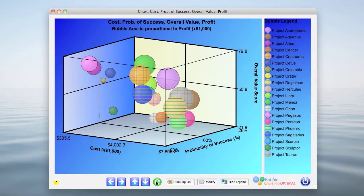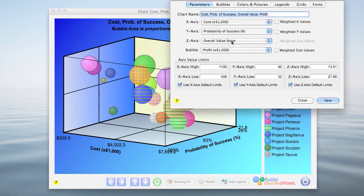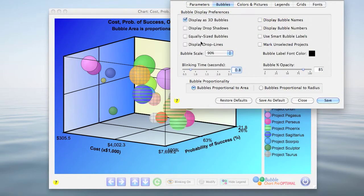In 3D bubble charts, it can be difficult to see the relationship of the bubbles and the grids because of the visual perspective. So, Bubble Chart Pro has a couple of options for helping to overcome this. We'll start by opening the preferences form, clicking the bubbles tab, and then checking the display drop lines check box.